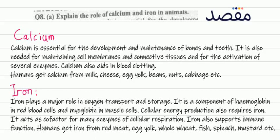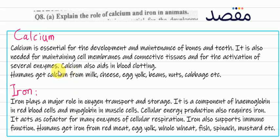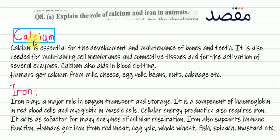We have a question: explain the role of calcium and iron in animals. In animals or humans, calcium and iron are minerals and micronutrients. Because they are micronutrients, they are required in smaller quantities. But what are the important roles of both?